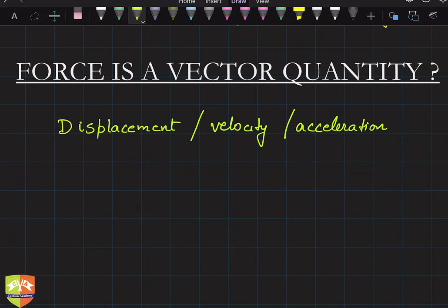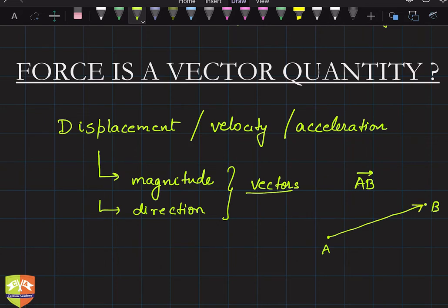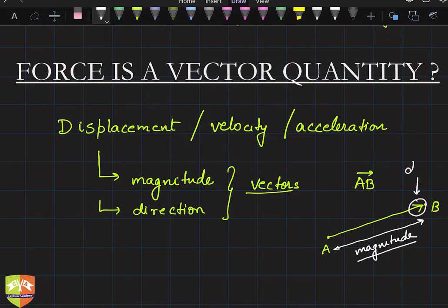The speciality of a vector quantity is that all of them have a magnitude — that means they have some value — and they also have direction. Direction is equally important. Those quantities which have both magnitude and direction are called vectors. We used to name them like A to B with an arrow sign, where A is the tail (start point) and B is the head (end point). The arrow represents the direction, while the length of the arrow depicts the magnitude.